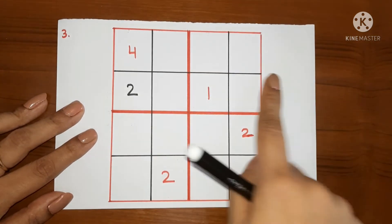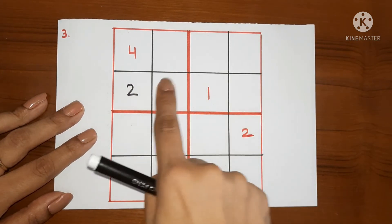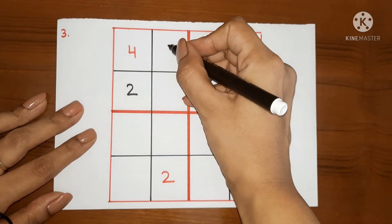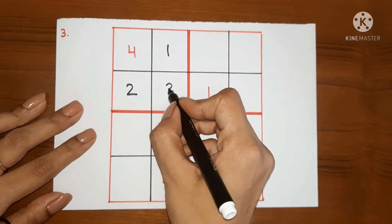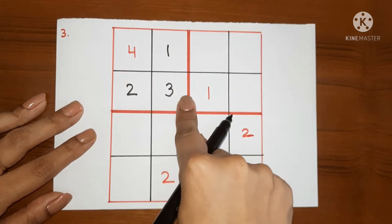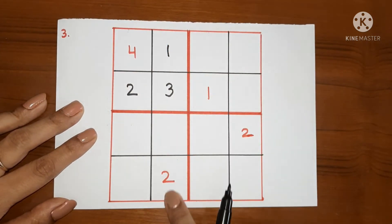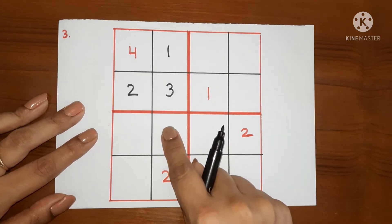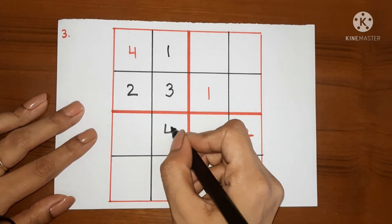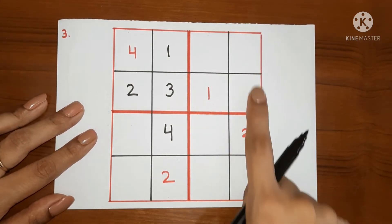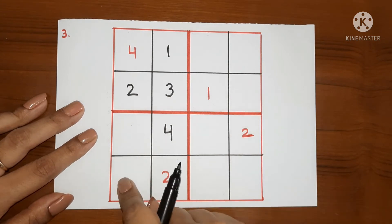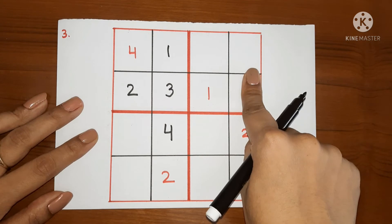Now, 1 and 3 left. In this row, 1 cannot come. So 1 cannot come here. So we have to write 1 here and 3 here. This way, this box is complete. Now, you can see in this column, only 1 number is left and that is 4. We will move on to this box as we cannot fill 1 and 3 here right now. We have to fill this box first.